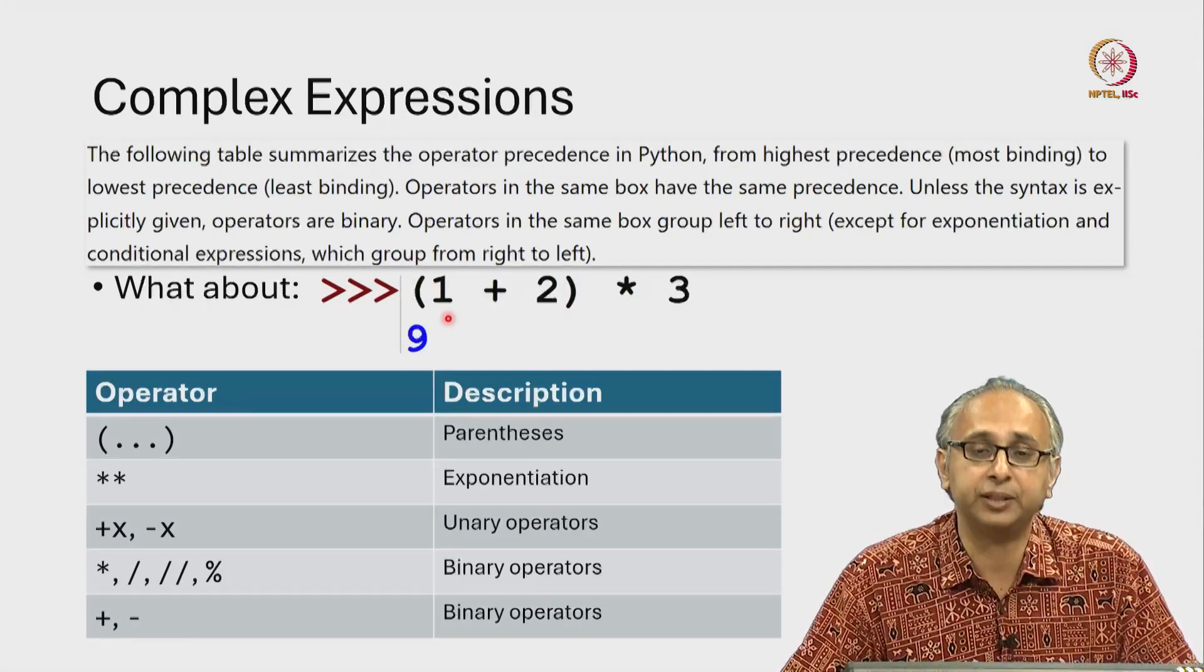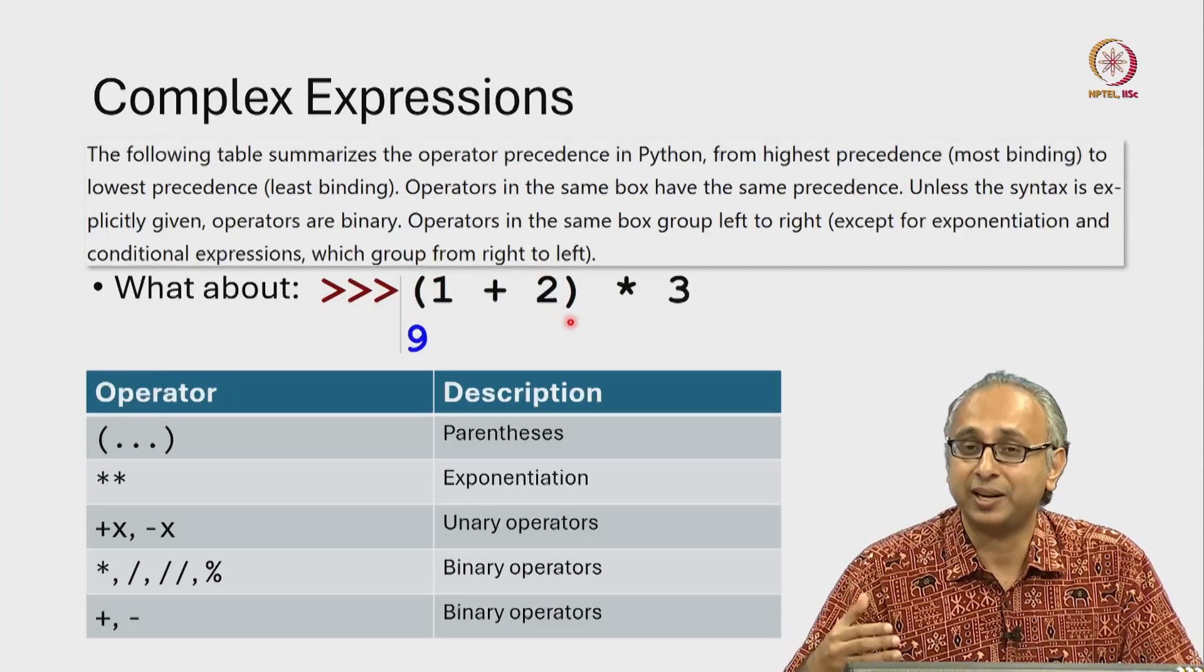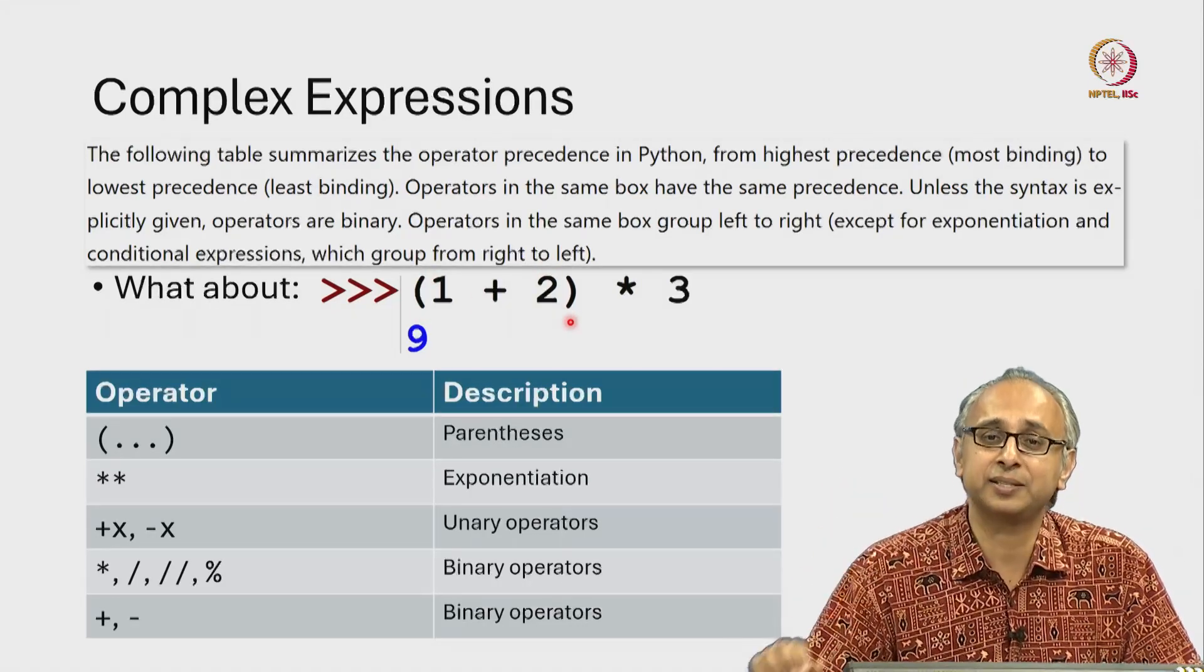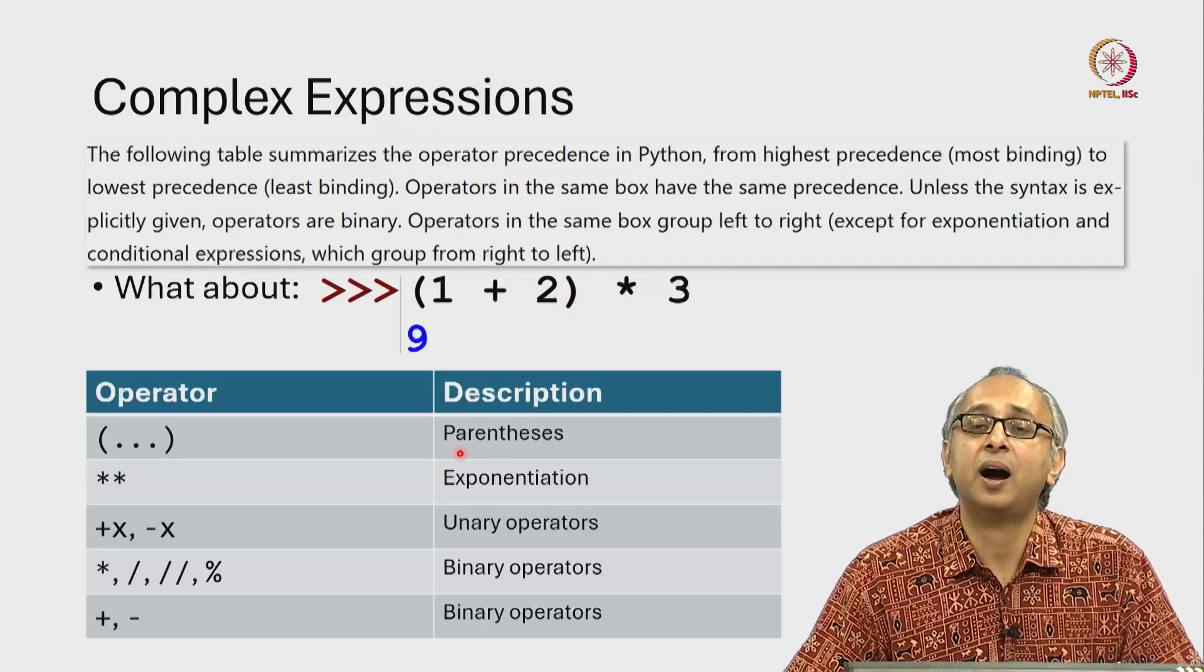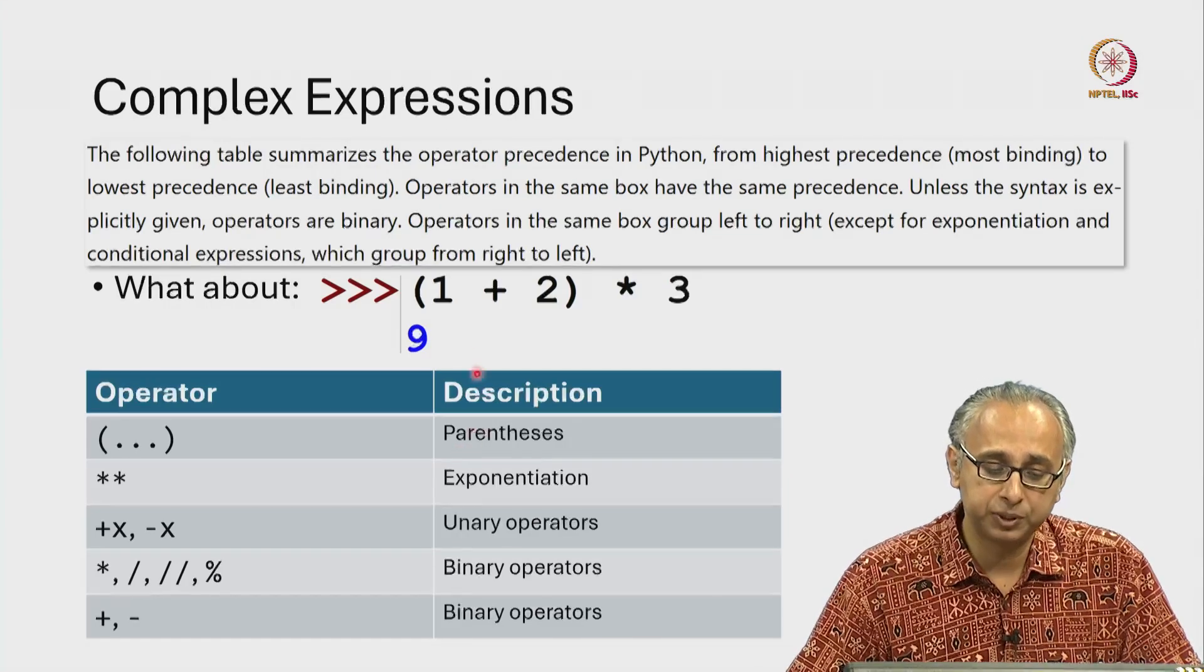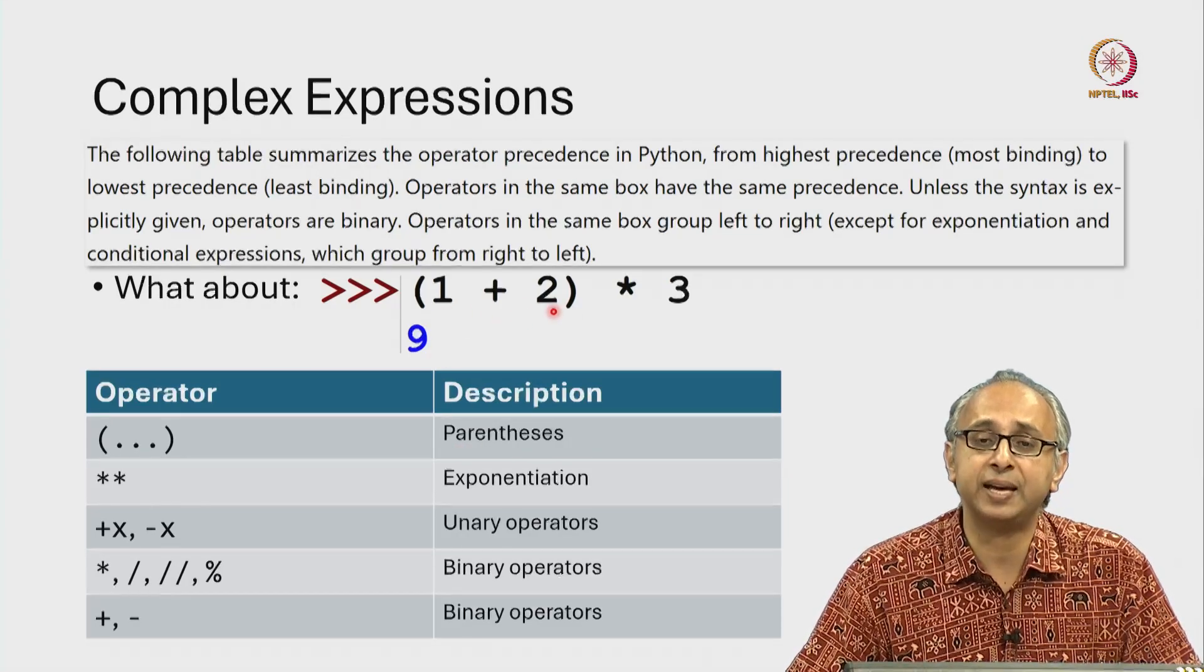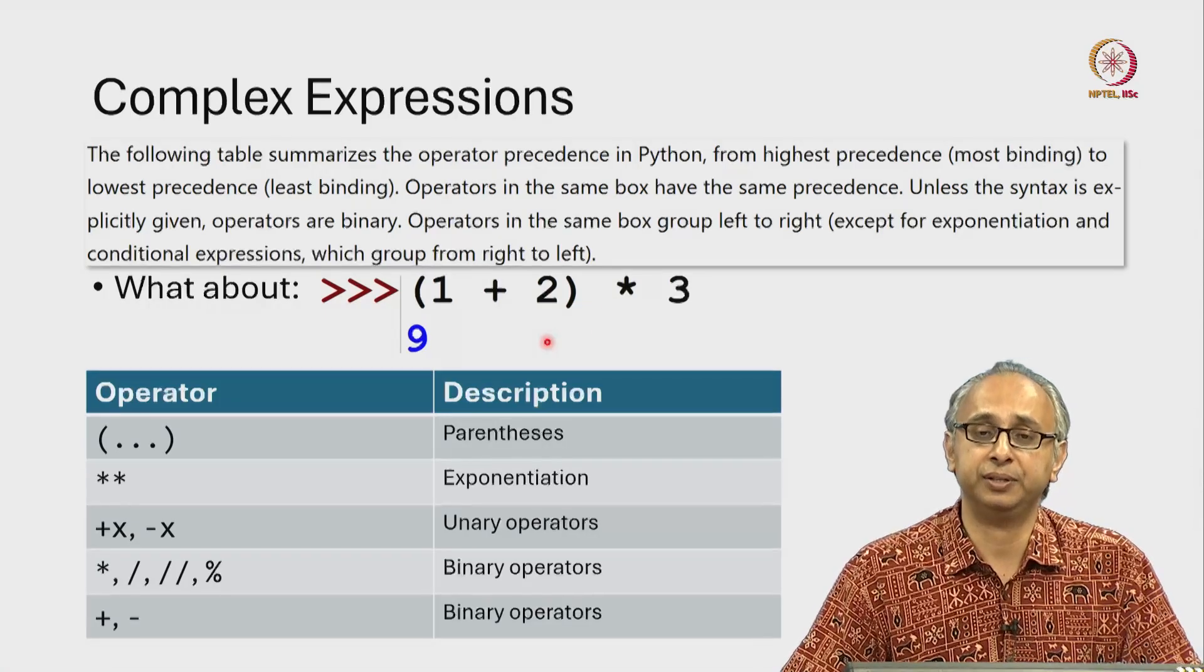If we wanted to get the answer 9, we would use brackets just like in our board maths rules. Brackets come first and you can see that brackets or parentheses are highest in this precedence. So that would give us the opportunity to first add and then we would multiply with 3 to get the answer 9.